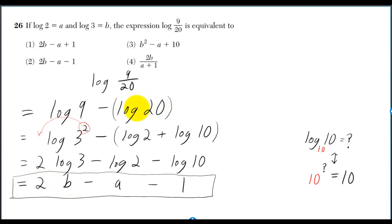Then for log 20, I tried breaking it up into logs that involve 2 and 3, but no combination of multiplying 2s and 3s will give you 20. Instead, you want to use the fact that 20 is equal to 2 times 10 to break it up into log 2 plus log 10.